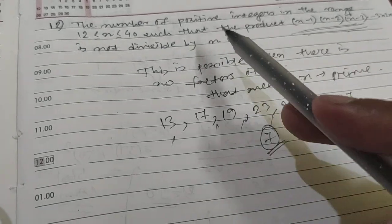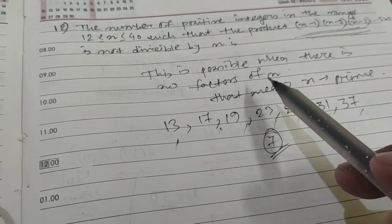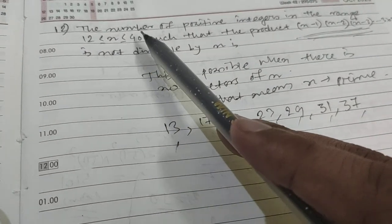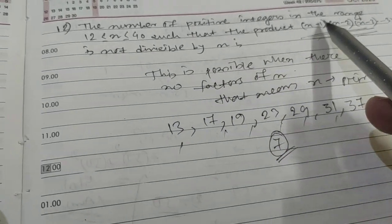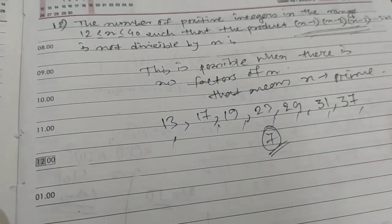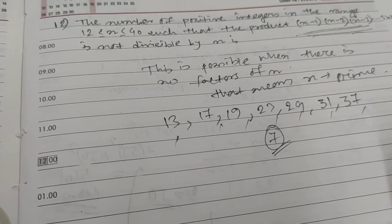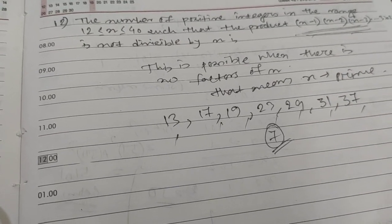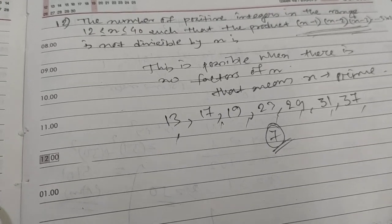So for these seven positive prime integers in the range 12 to 40, the product will not be divisible by n. This is the solution. If you have any doubts, you can write your comments or queries